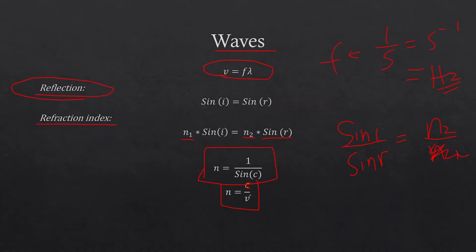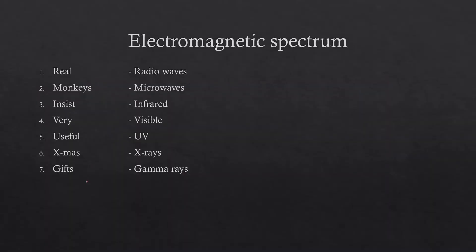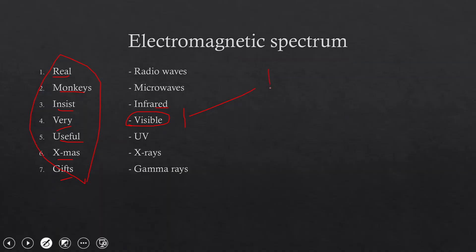Here's a mnemonic for the electromagnetic spectrum: 'Real Monkeys Incest Very Useful Xmas Gifts' — Radio, Microwave, Infrared, Visible, Ultraviolet, X-ray, Gamma. Infrared has red in it, so red is at the top of visible light and violet is at the bottom — because ultraviolet. Going down the spectrum, frequency and energy increase while wavelength decreases; frequency and energy are directly proportional.